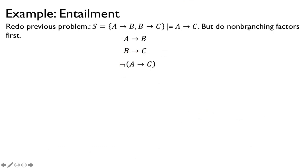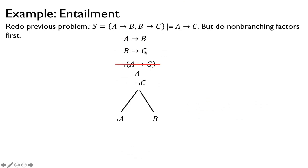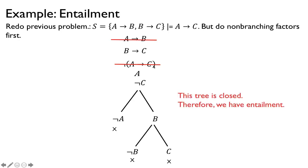Let's redo the same entailment problem but apply non-branching rules first. We resolve 'not (A implies C)' first — giving A and not-C — and cross it out. Now we resolve the branching rules. For 'A implies B', we branch to 'not-A or B'. But notice that one branch already contains A and not-C with not-A — wait, we can close a branch early if there's already a contradiction. After branching with 'B implies C' as 'not-B or C', all resulting paths are closed. The tree is still closed and we have entailment, but it's simpler because we did non-branching factors first.